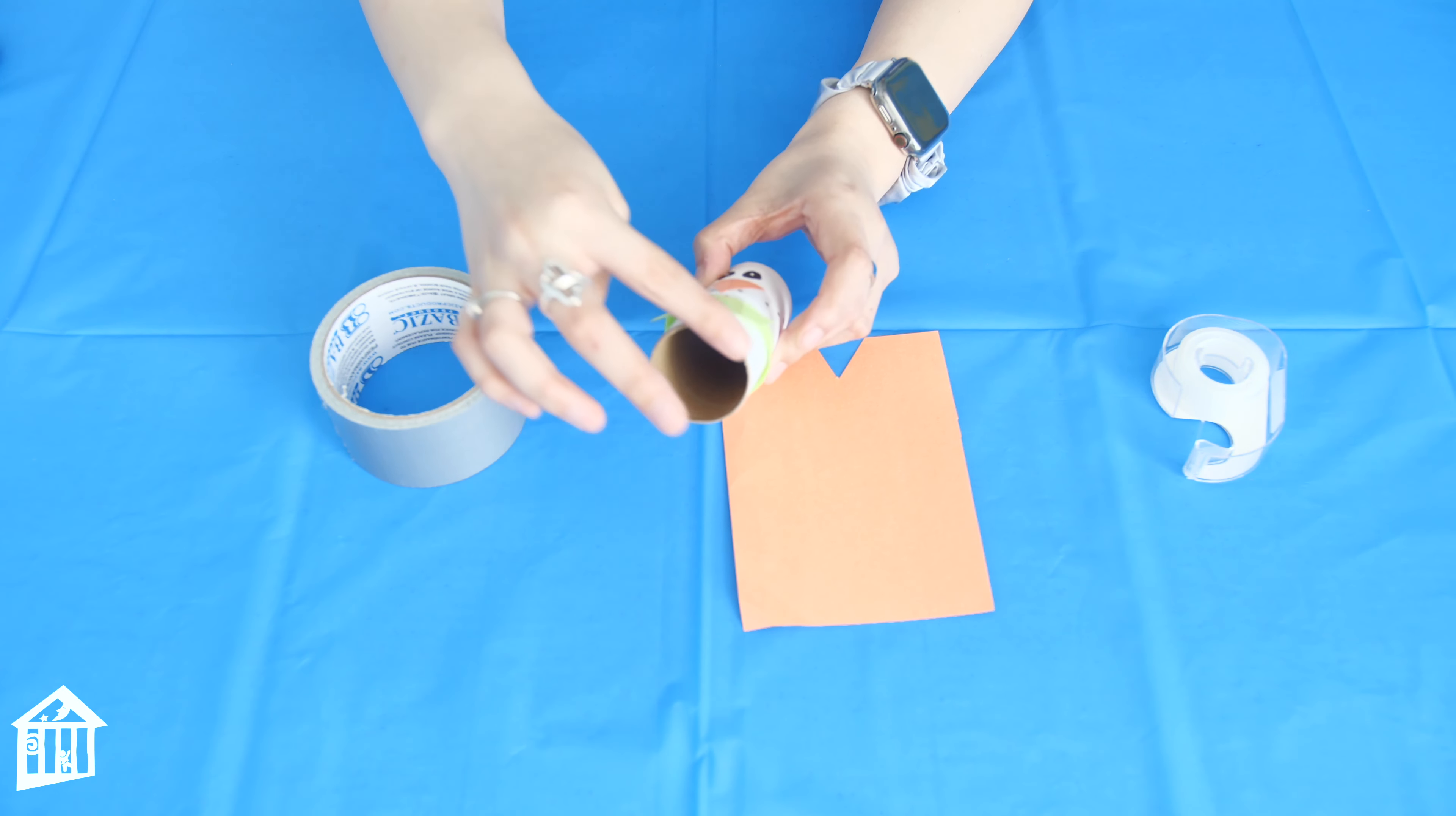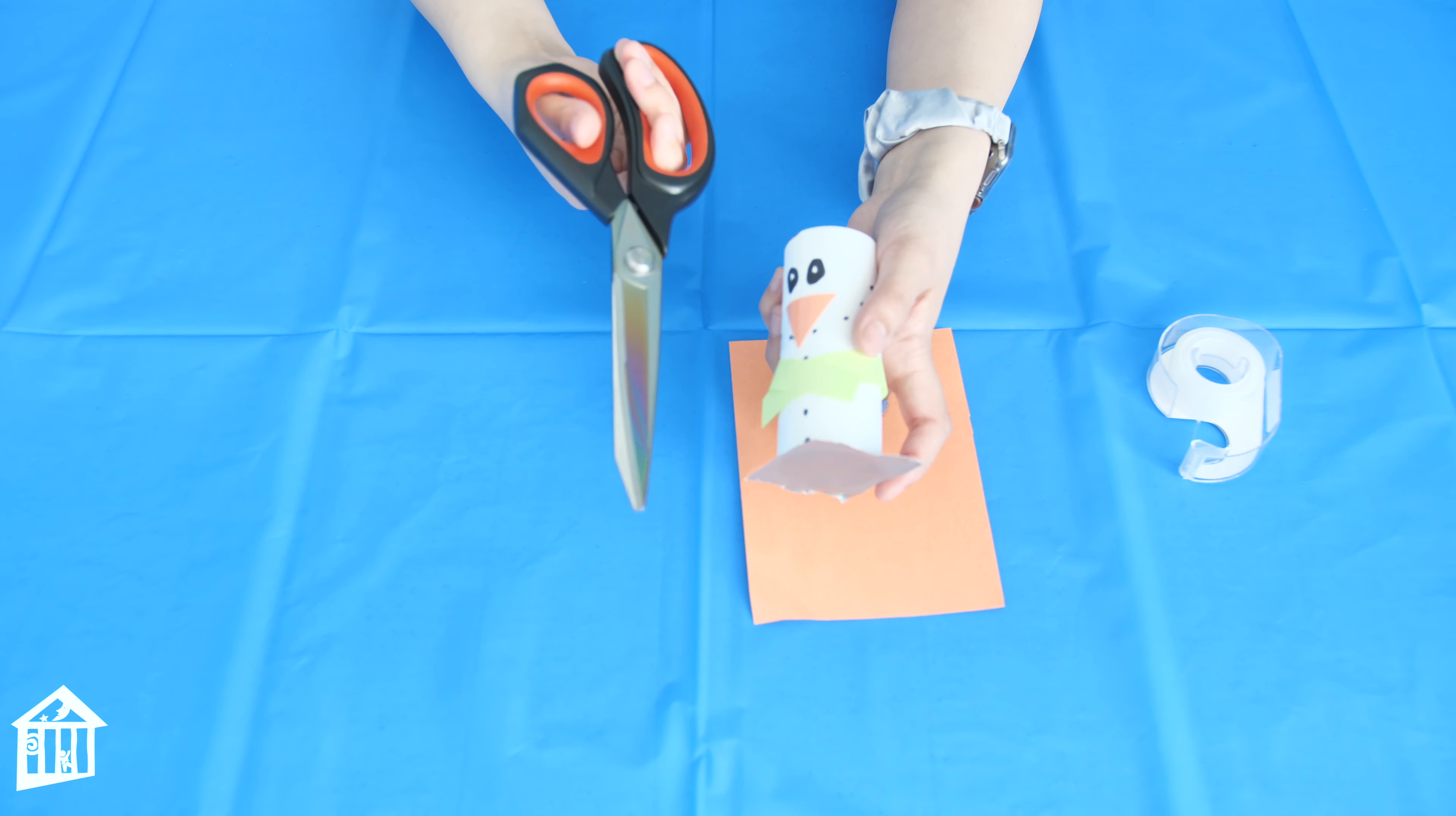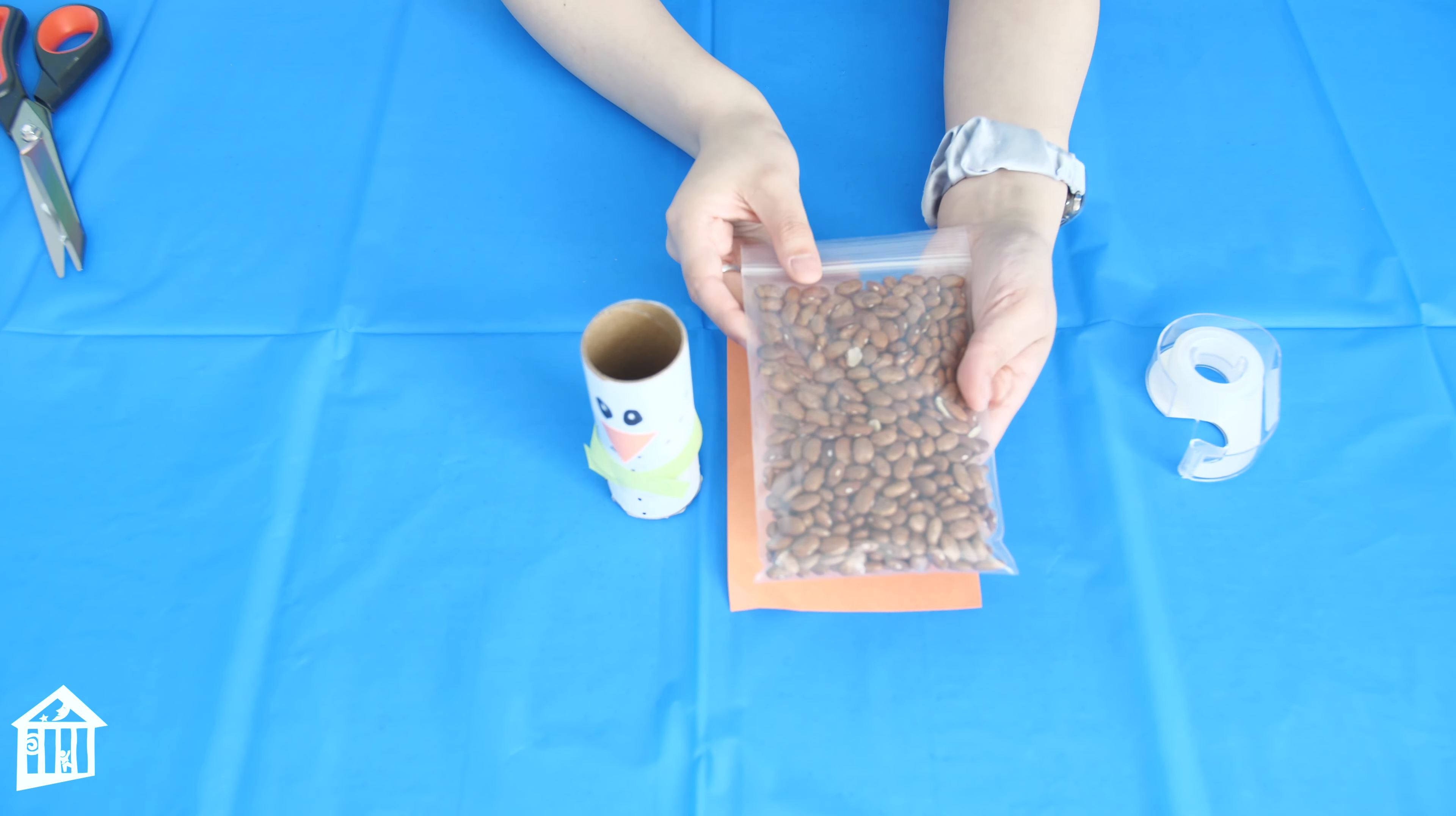Next, grab your piece of duct tape and we're going to add a piece of tape at the bottom of the toilet paper roll. So once you grab your piece of duct tape, you're going to tape it to the bottom. As you can see it's a little bit too big, but that is okay because using your scissors you're going to make a circle around the piece of tape so it can stick to it. There you go.